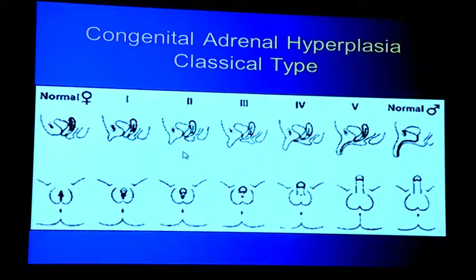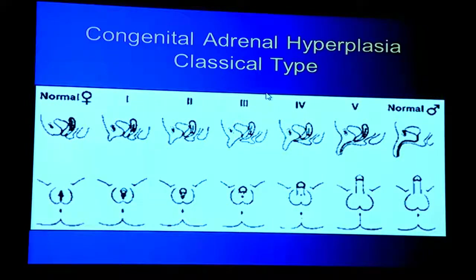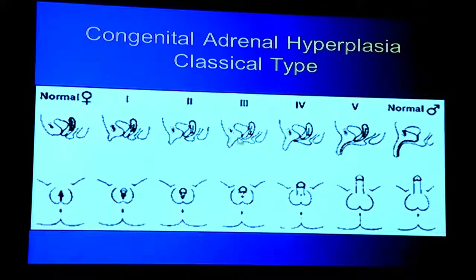A mirror condition is congenital adrenal hyperplasia — classical type — in which genetic females are exposed to testosterone during development. They carry mutated genes causing an enzyme to produce large amounts of androgens in the adrenal cortex. They're born not looking like typical females — they can have a very large clitoris, ranging from 1 to 5 on the scale — that externally makes them look male, although internally they have female organs.